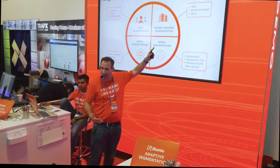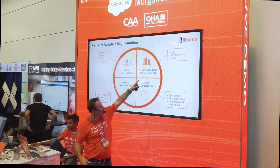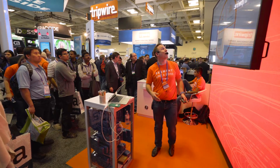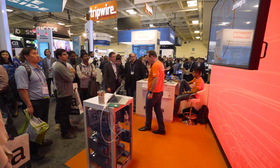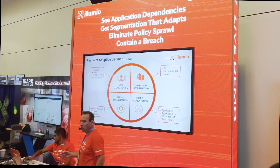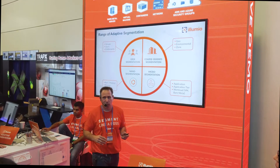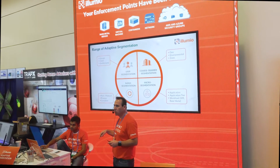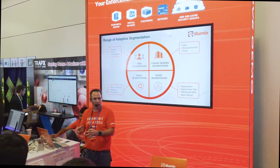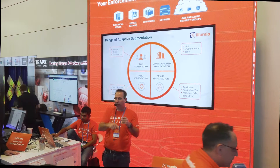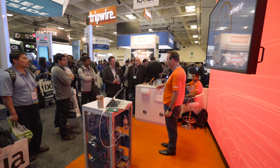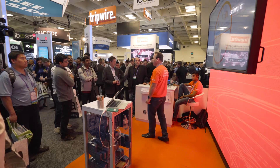We're going to move through our wheel of segmentation as we go through this. I talked about Morgan using coarse grain — I'll do demos of micro and nano segmentation as we move through these demos today. We're going to show you how you can visualize your application dependencies, how we do segmentation that adapts to changes in your environment, how we eliminate policy sprawl, and how we can detect a breach. We can enforce segmentation on bare metal servers, VMs — that's how we work in Microsoft Azure and Amazon — on containers, on security groups, and on Cisco and Arista switches.